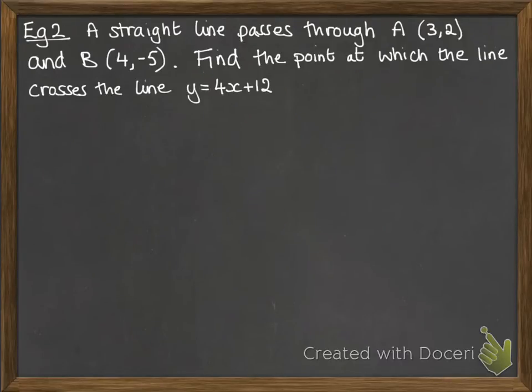Next example. A straight line passes through these two coordinates. We want to find the point at which the line that goes through A and B crosses the line y equals 4x plus 12.